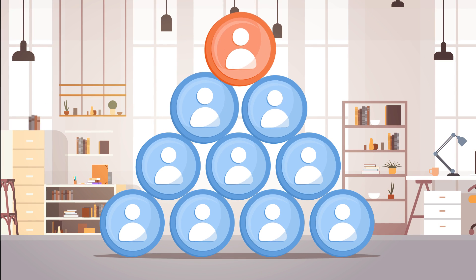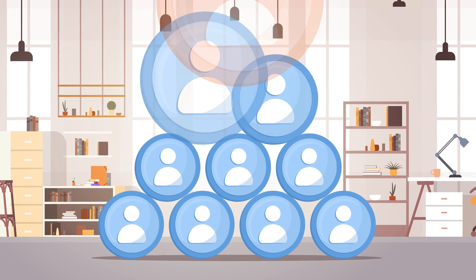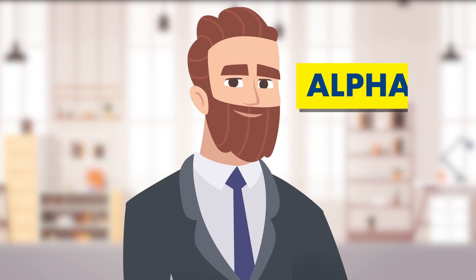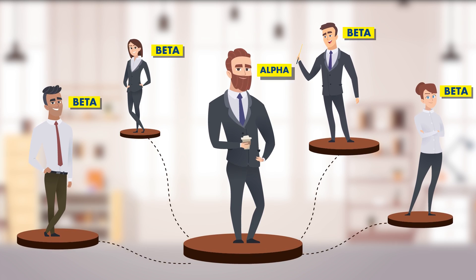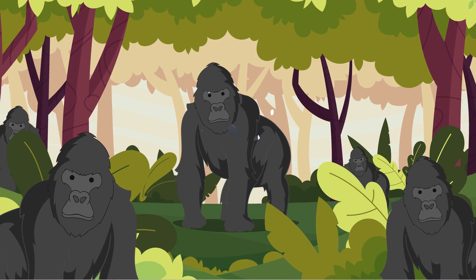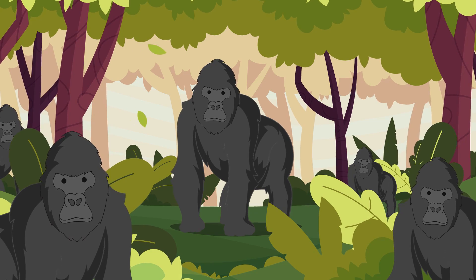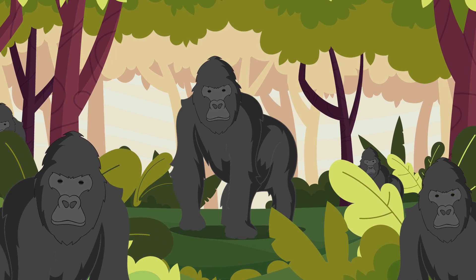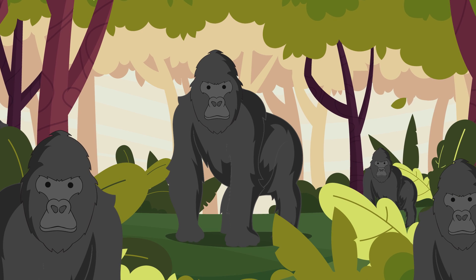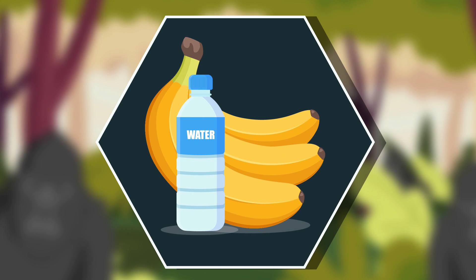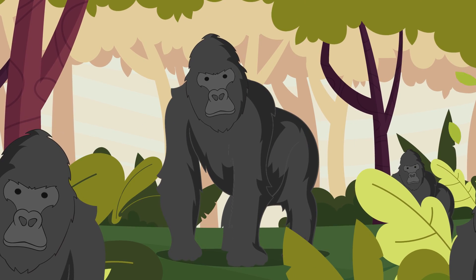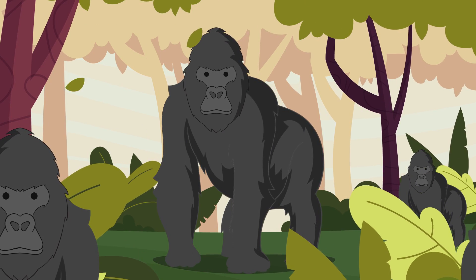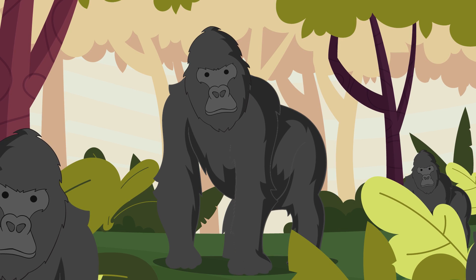A dominance hierarchy is a social ranking system within any group of social animals. In this social hierarchy, higher-ranking individuals, usually called alphas, exert some power or influence over lower-ranking individuals, traditionally called betas. For example, groups of mountain gorillas are led by a single alpha male, typically the largest and strongest member of the group. Because of his size and power, the alpha has more access to resources, like food and water, and higher rates of reproductive success. But he also acts as a leader for his social group, taking responsibility for protecting weaker members.